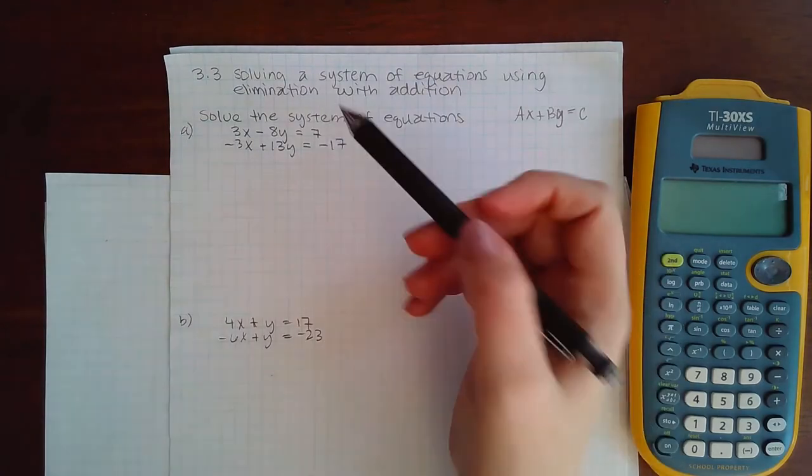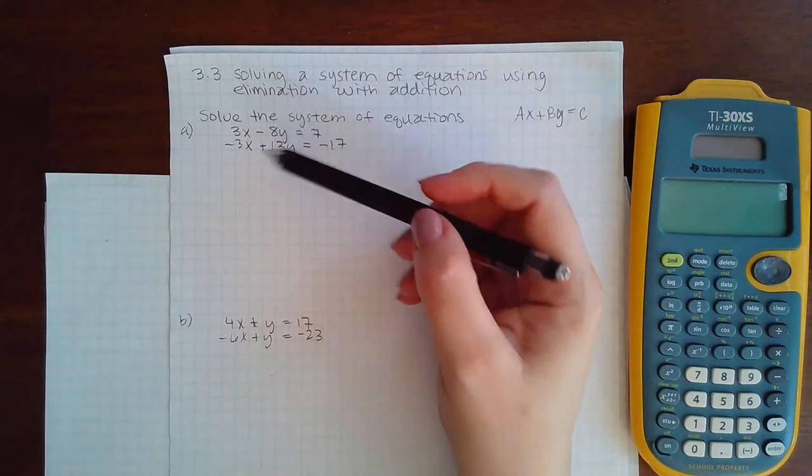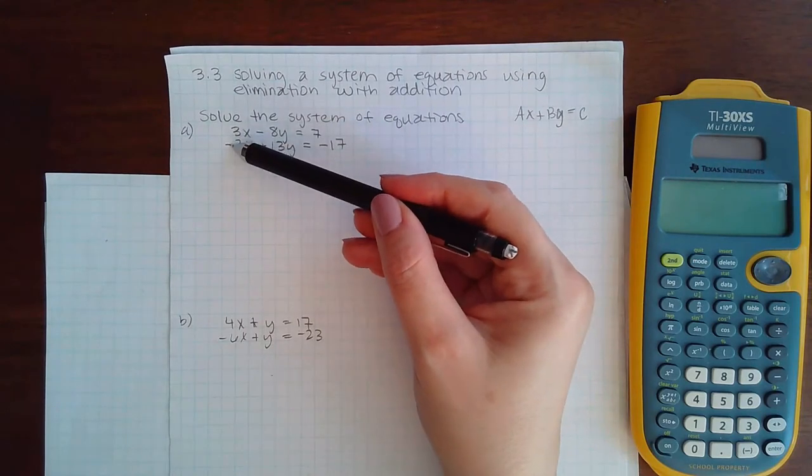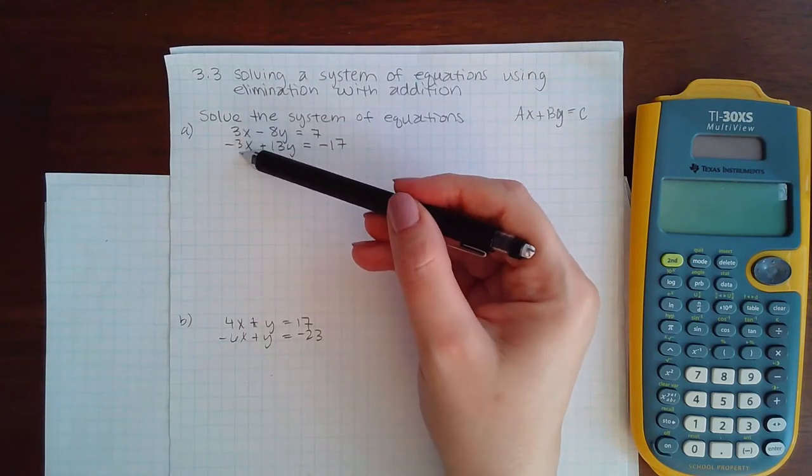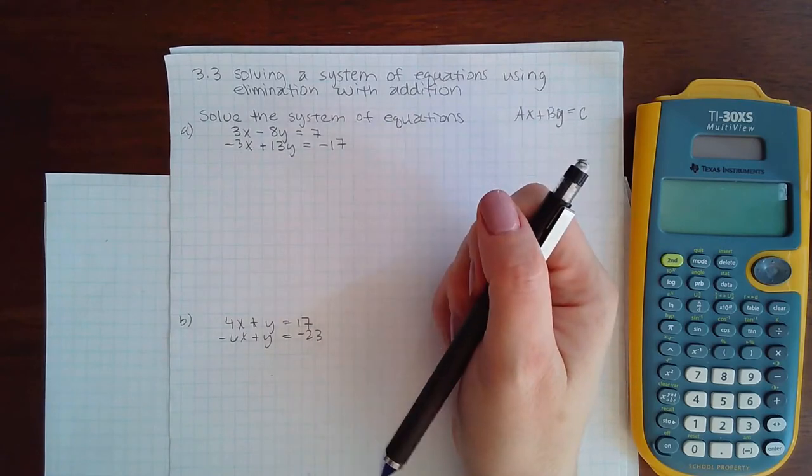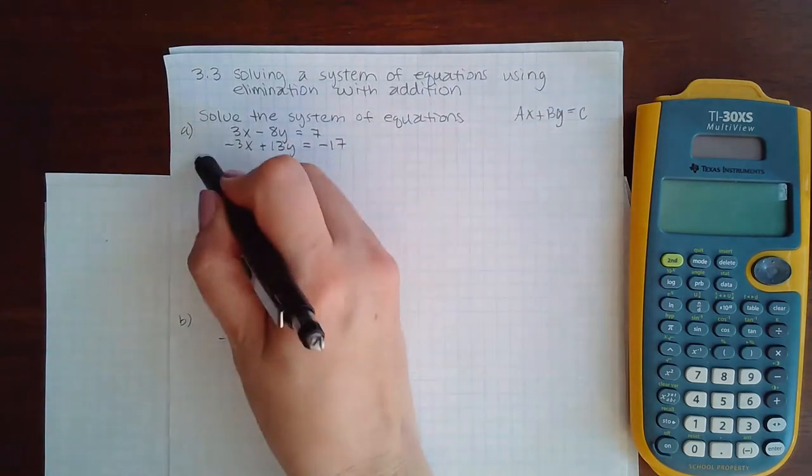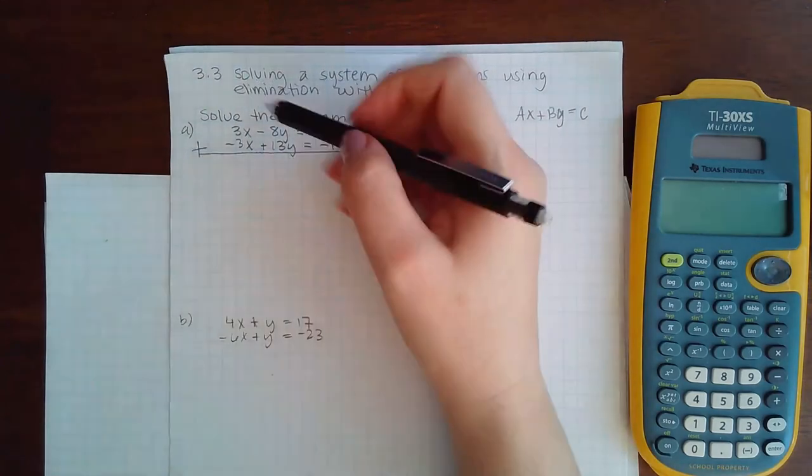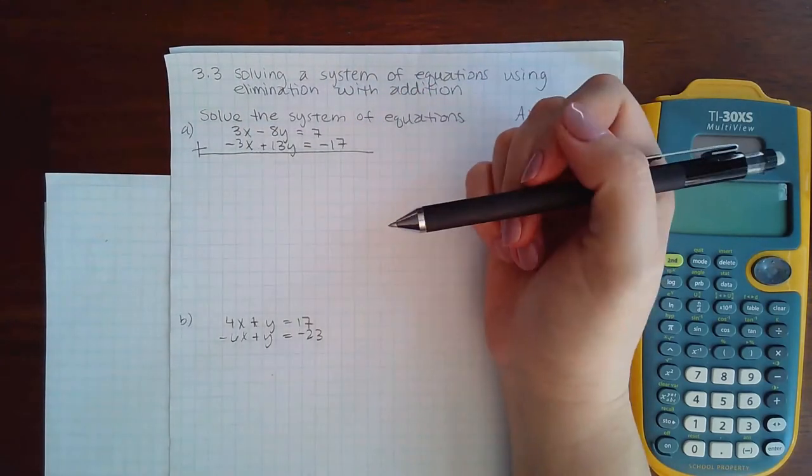In example A, I notice that I have 3x and -3x. 3 and -3 are opposite coefficients, which means that if I add these two equations together, they would eliminate the x variable.